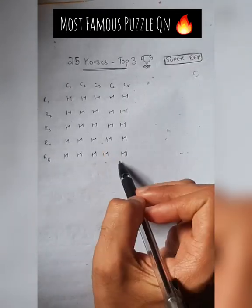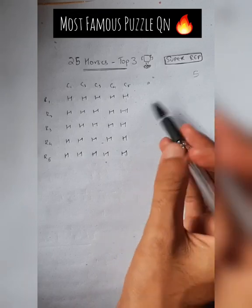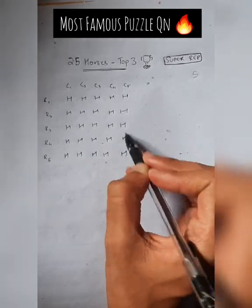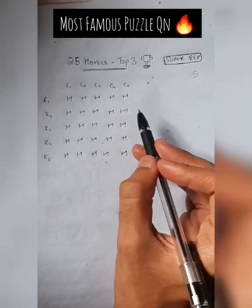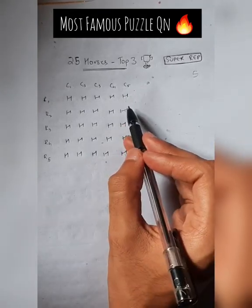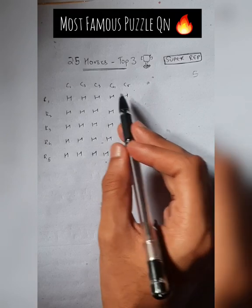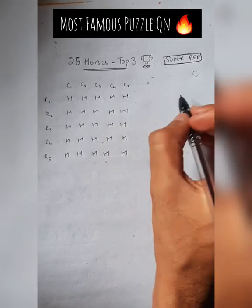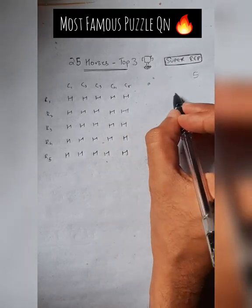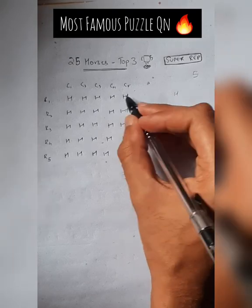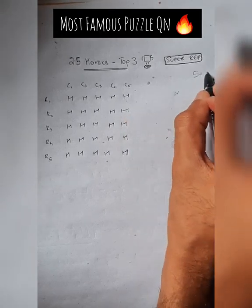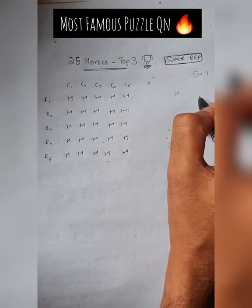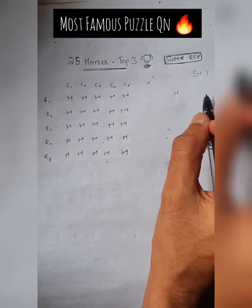We will now race the fastest horse from each row together. Whoever comes first will be the overall first. Let's suppose this one came first. So one more race happened, and we know the top first place.